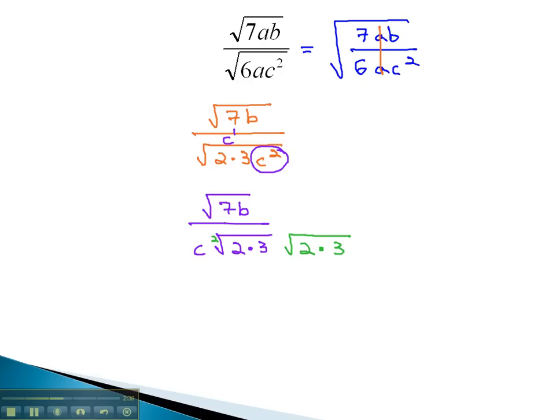Now we will have two 2's and two 3's in the denominator, which can divide by the index of 2. Of course, we will do the same thing in the numerator, multiplying by the square root of 2 times 3. When we do this in the numerator, we have 7 times 2 times 3, which is 42b.